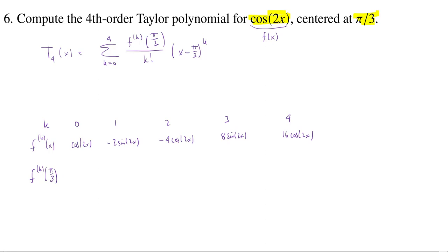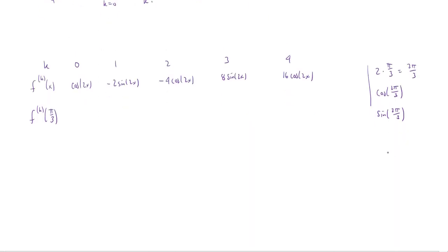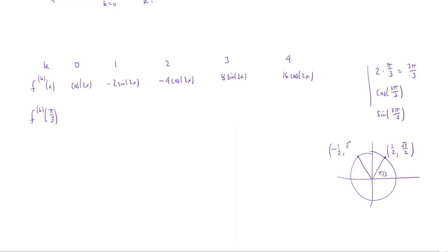Now we need to evaluate each of these when x equals pi over 3, giving us 2x = 2pi over 3. It's useful to draw your unit circle. At pi over 3, the cosine is 1/2 and the sine is root 3 over 2. At 2pi over 3, the coordinates are negative 1/2 and root 3 over 2, so the cosine is negative 1/2 and the sine is positive root 3 over 2.